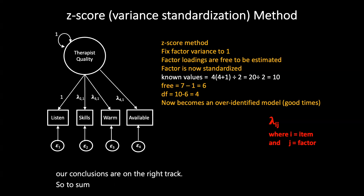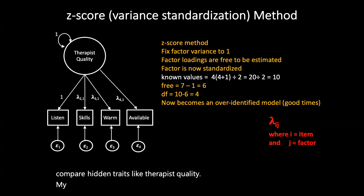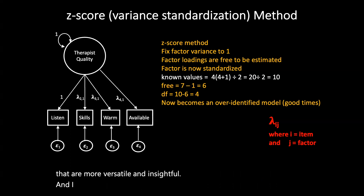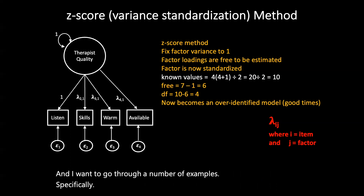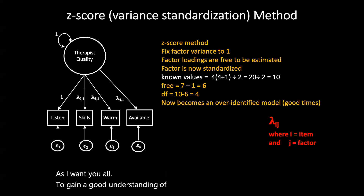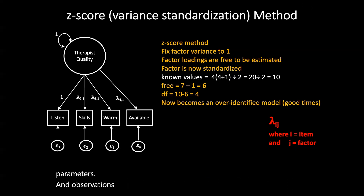To summarize, the Z-score method offers a standardized way to compare hidden traits like therapist quality. By carefully considering our items and constraints, we can create models that are more versatile and insightful. I want to go through a number of examples using the Z-score method for simplicity, so you all gain a good understanding of how to calculate the number of parameters and observations, along with the degrees of freedom to determine what type of model we have.